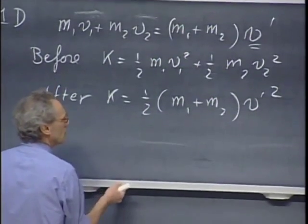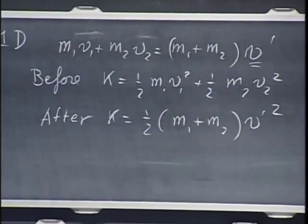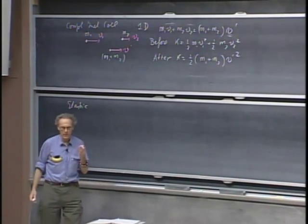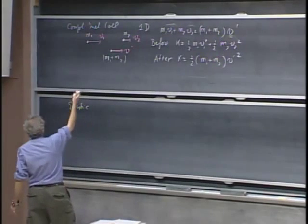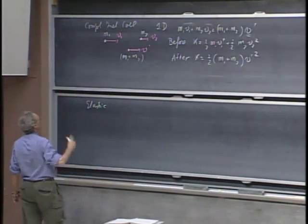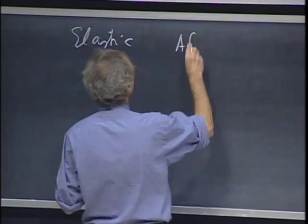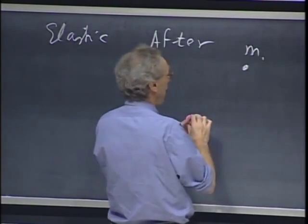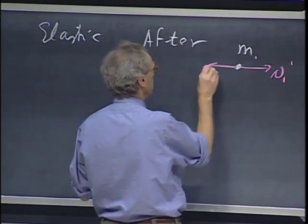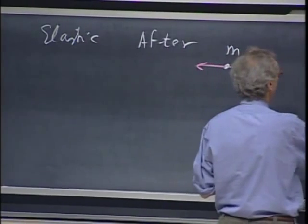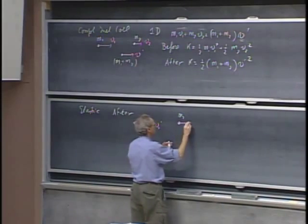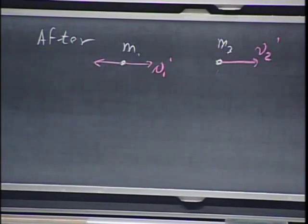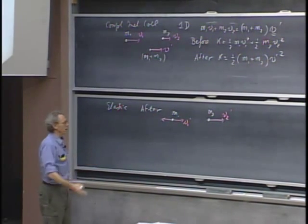Let's do now an elastic collision. I'll add the word completely elastic, but elastic itself is enough, because that means that kinetic energy is conserved. I start with the same initial conditions, m1 v1, m2 v2, but now after the collision, m1 could either go this way or this way — I don't know. So this could be v1 prime. m2, however, will always go into this direction, because if you get hit from behind by object one, after the collision you obviously go in this direction.